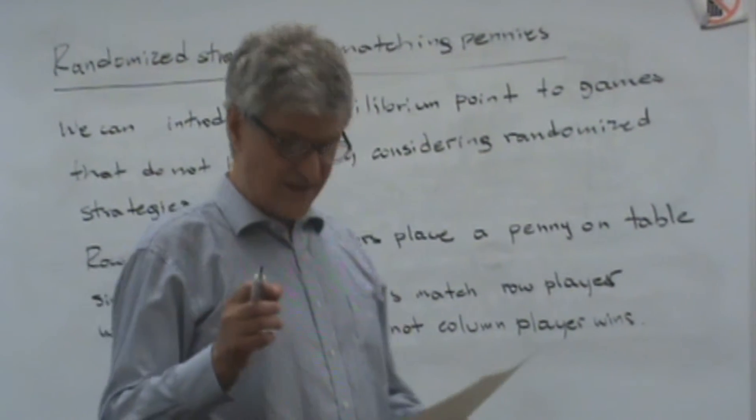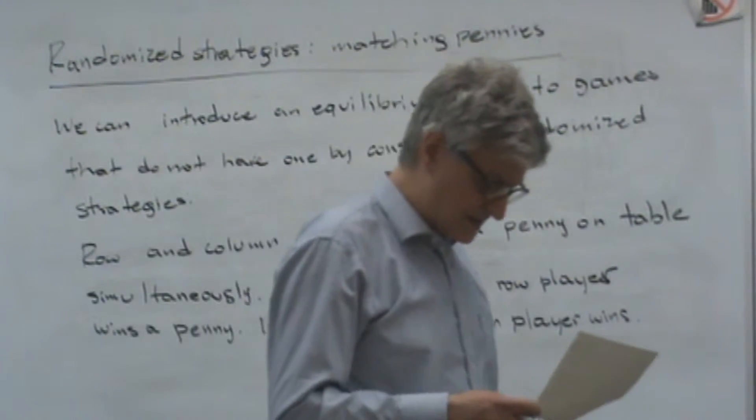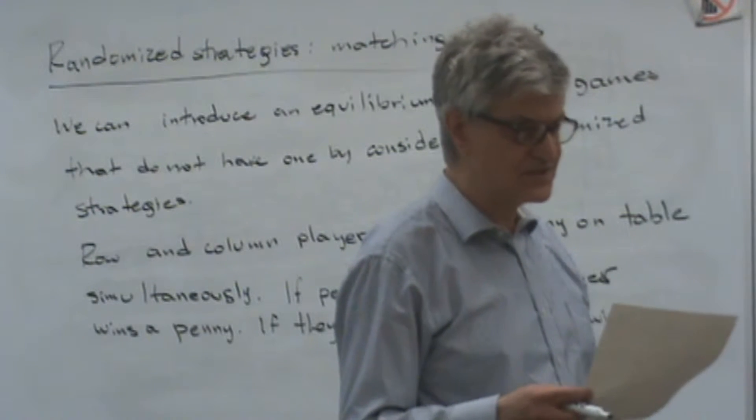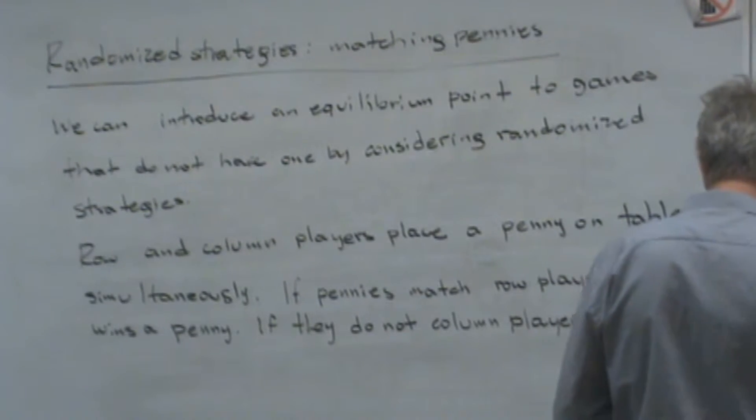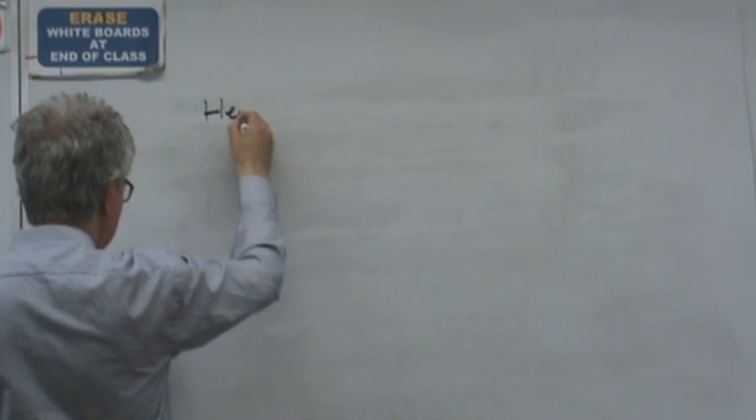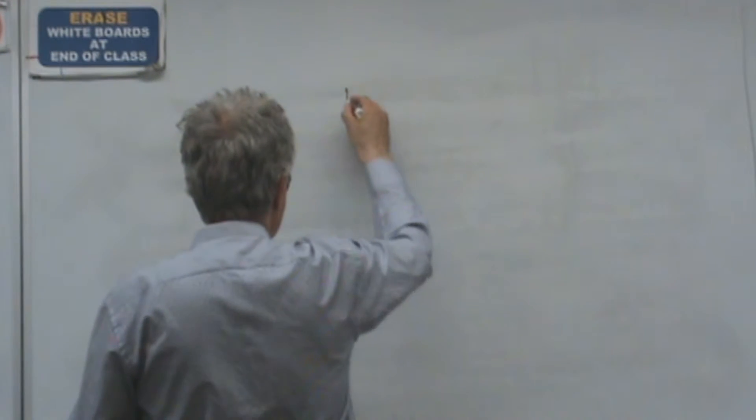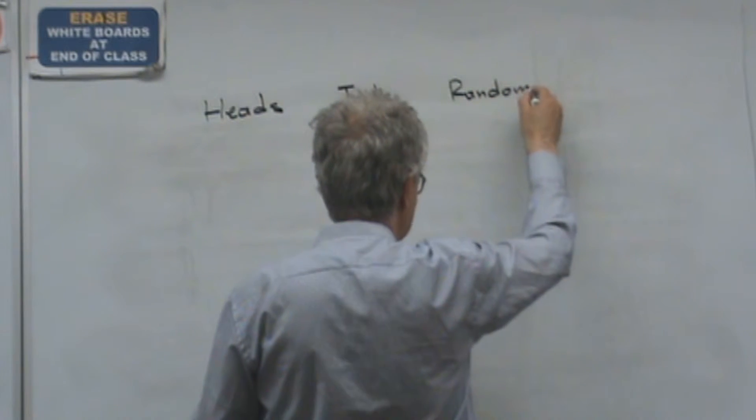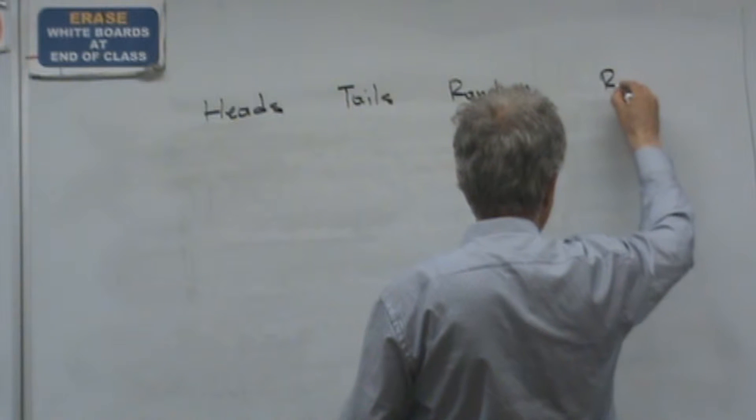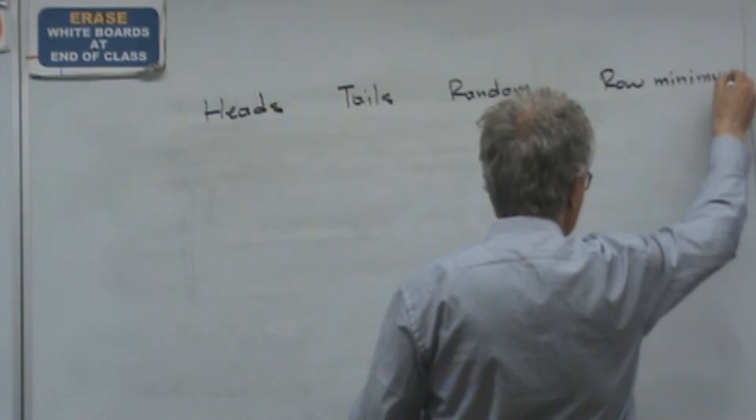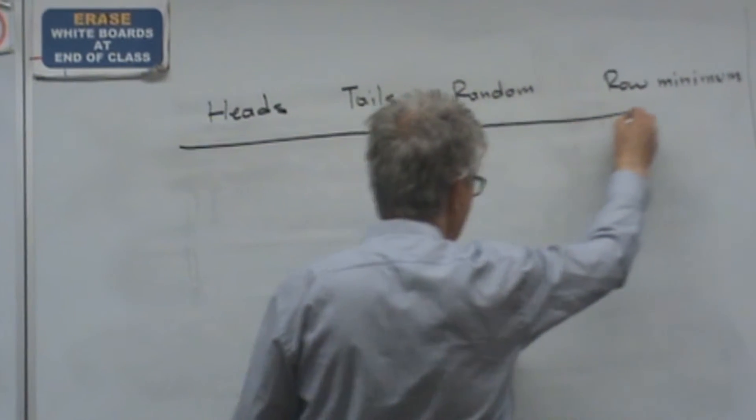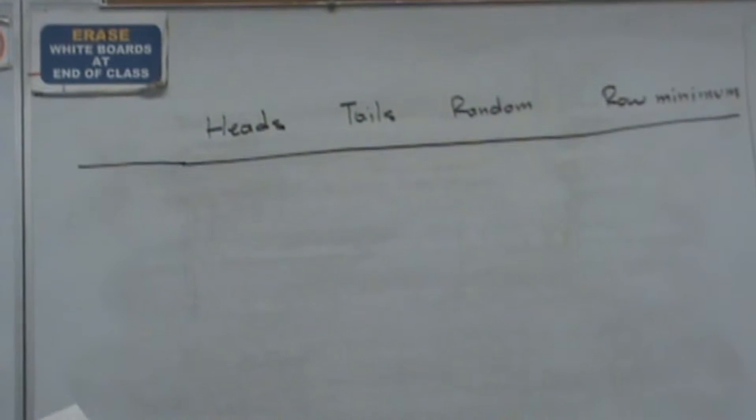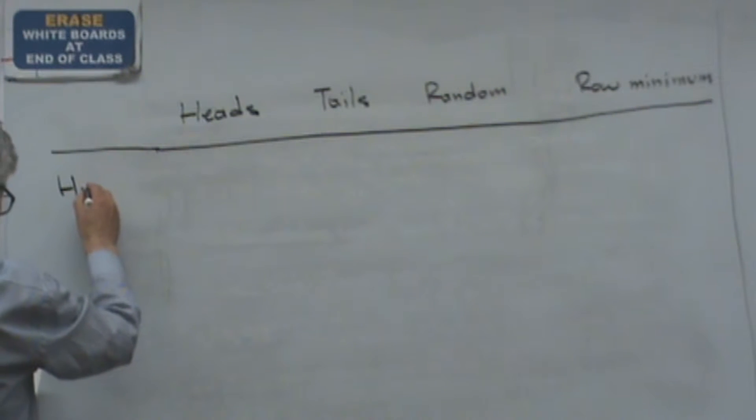So let's see the reward matrix if we introduce the additional option where the players can put pennies at random. So we consider the reward matrix. We have heads, tails, and a random strategy. These are the options for the column player.